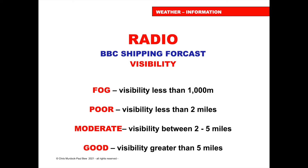Visibility in the shipping forecast: fog is visibility less than 1,000 metres; poor is less than two miles; moderate is between two and five miles; and good is visibility greater than five miles.